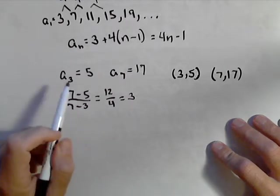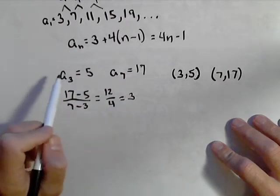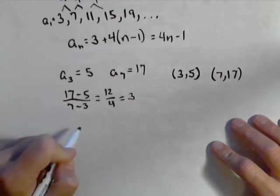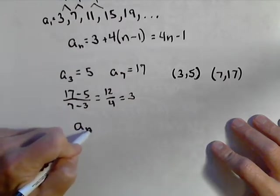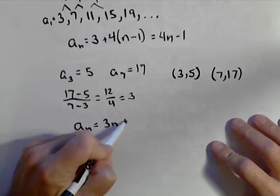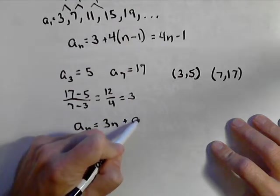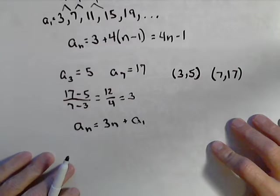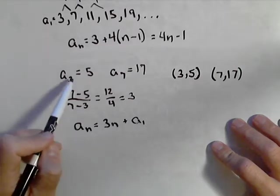And then there's a couple different ways we can find the first term. One is we can repeatedly subtract three. But if we think back to our linear functions, we know a sub n now is three n plus whatever our first term is. Let's call it a sub one. We can plug in either of these.